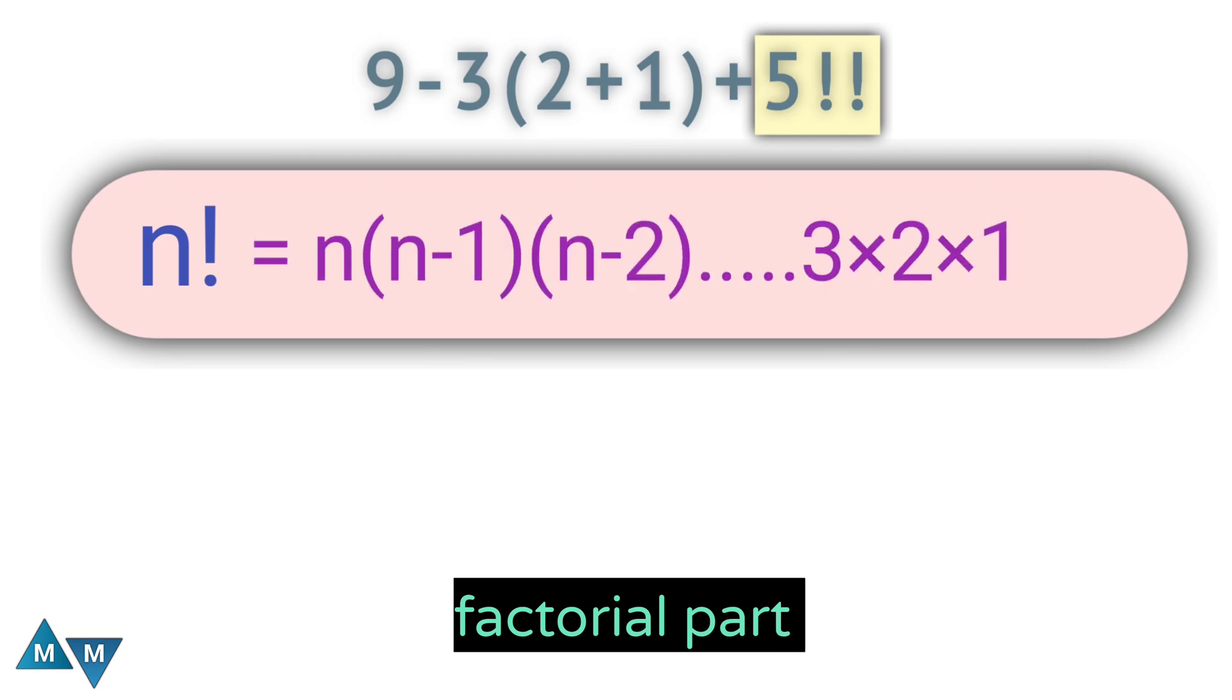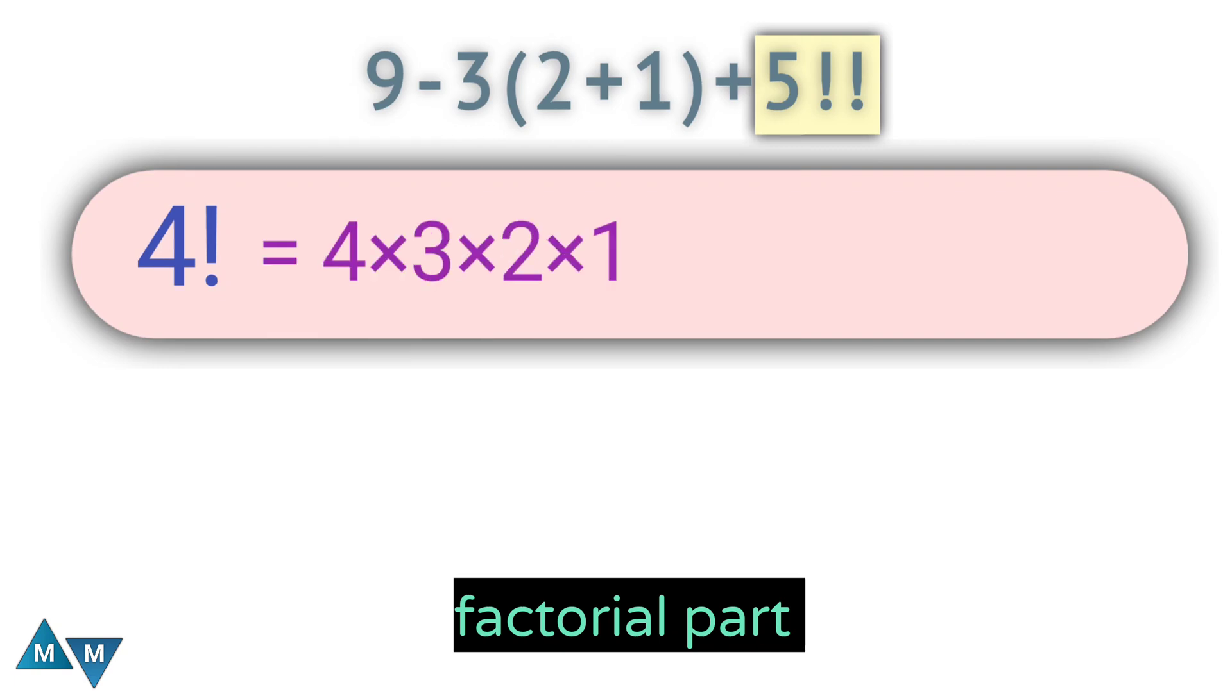For example, 4 factorial can be written as 4 times 3 times 2 times 1, which gives us 24.